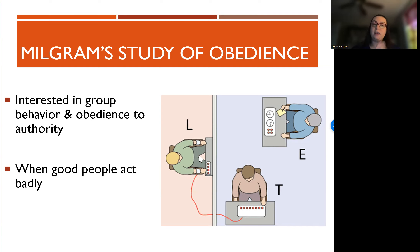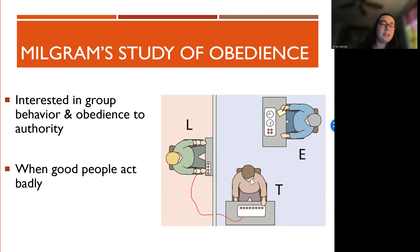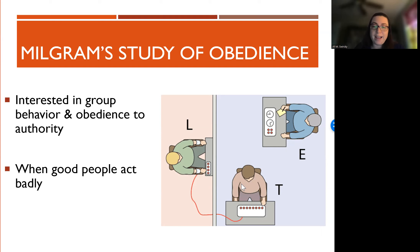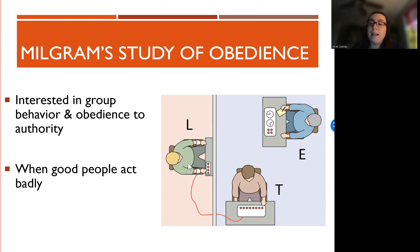The learner is actually a confederate or an actor hired by the research team. They'll bring in these two individuals — only one is actually a participant. They will choose from a hat to see who's going to be the teacher or the learner, but it is rigged. The participant will always pull that they are the teacher. They're then separated and put in two different rooms. The teacher can't see the learner; the learner can't see the teacher.